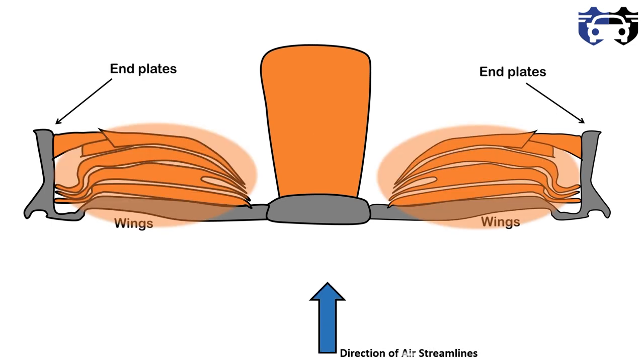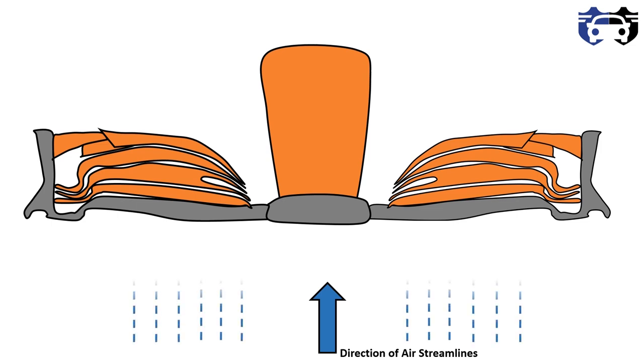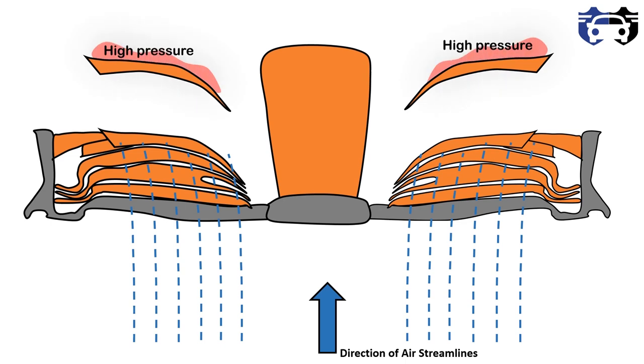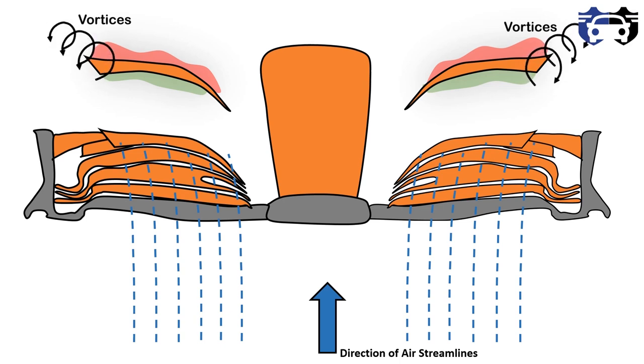Now as the air strikes the wing, it will develop a pressure difference. These wings will develop high pressure at top and low pressure at bottom. This will generate downforce. Also, due to pressure difference, the air rushes from top to bottom, generating vortices here. These vortices are very helpful.